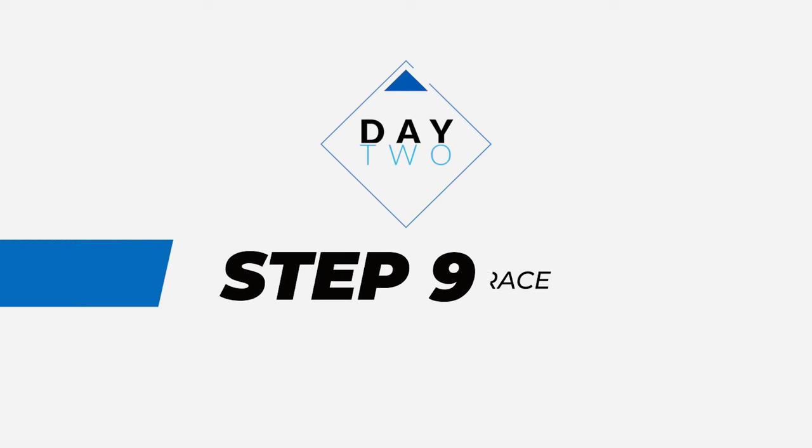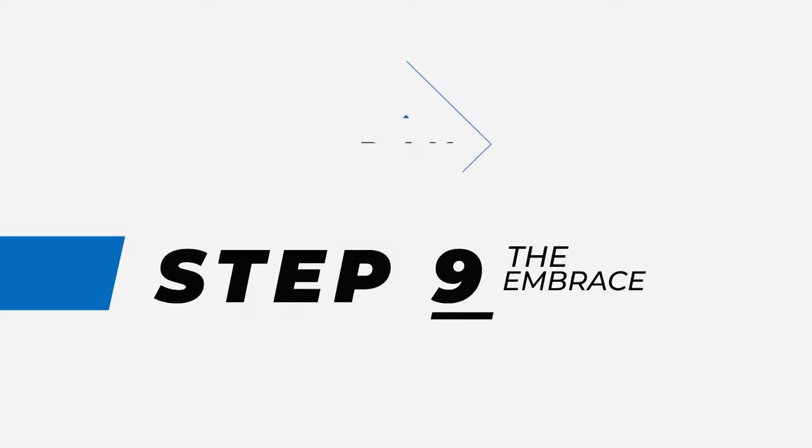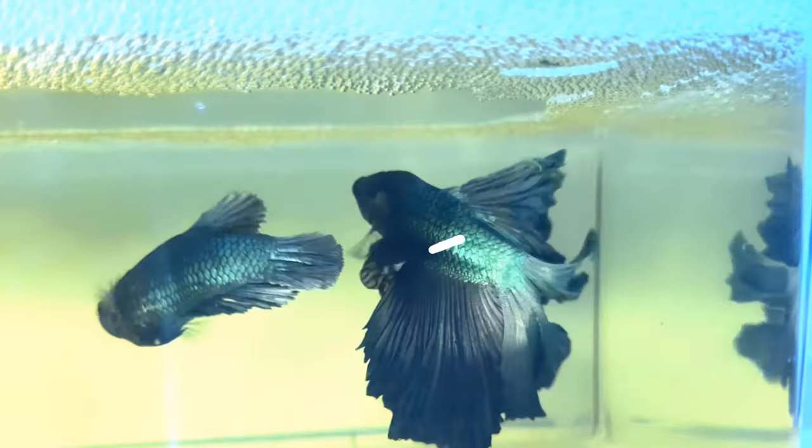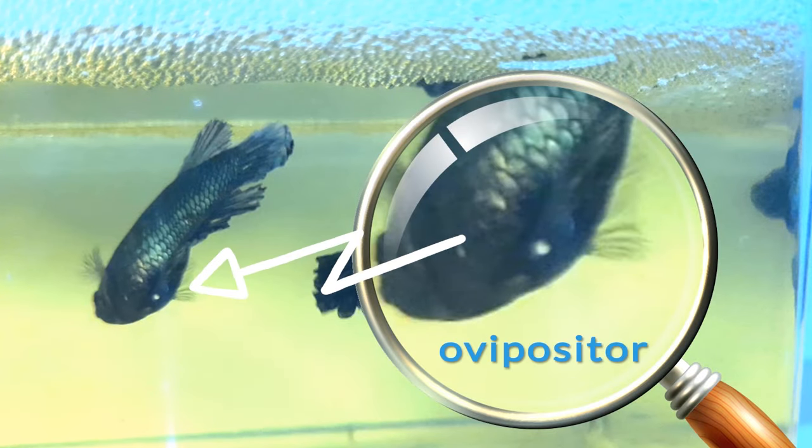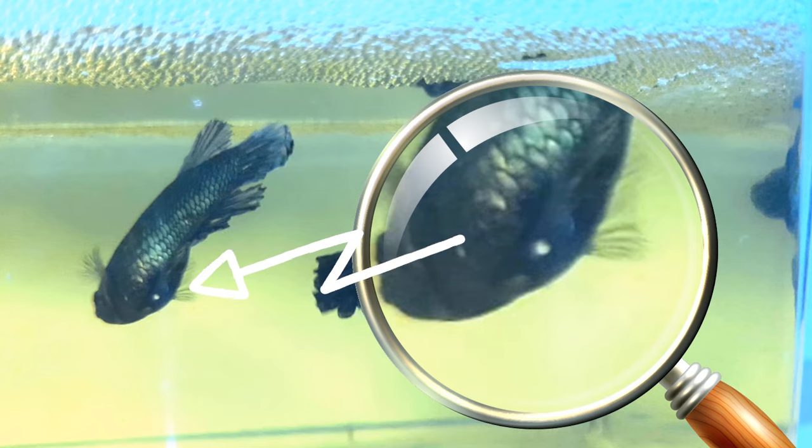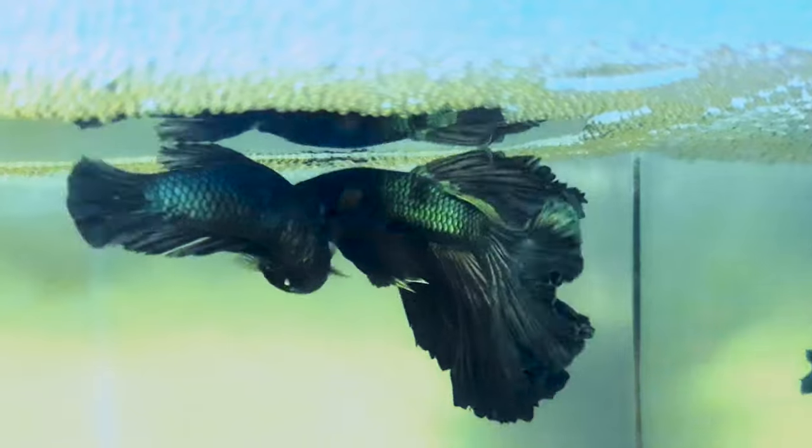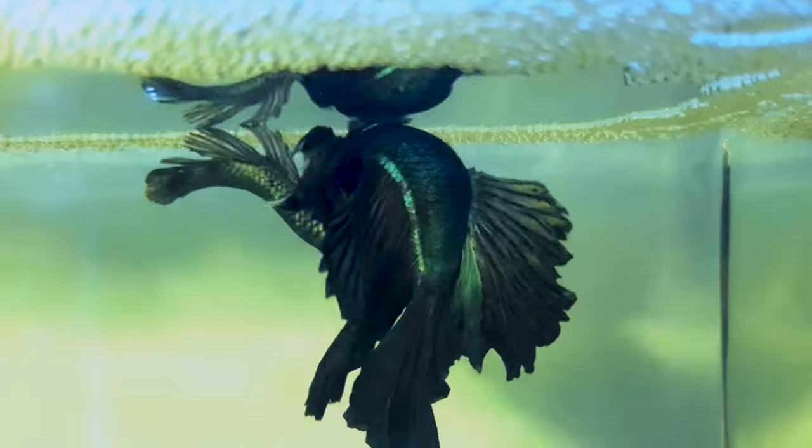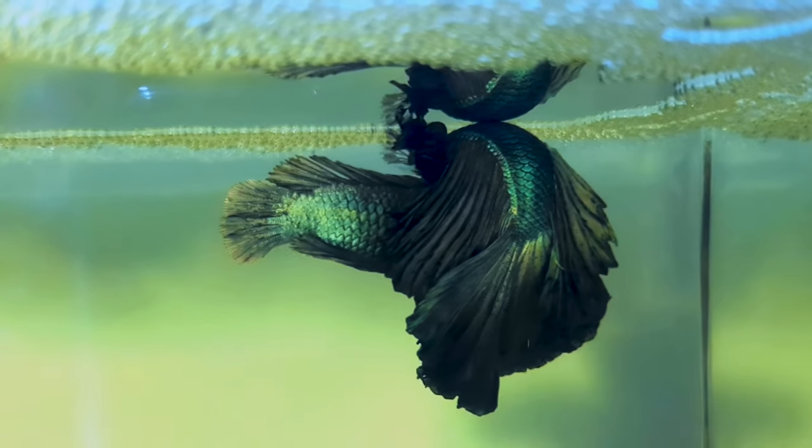Step 9. Day 2. The Embrace. This is the egg spot or ovipositor, which is only found in female bettas. So this is to segregate male from female on plakat varieties. Yes, it is. They will start to dance and try several embraces.